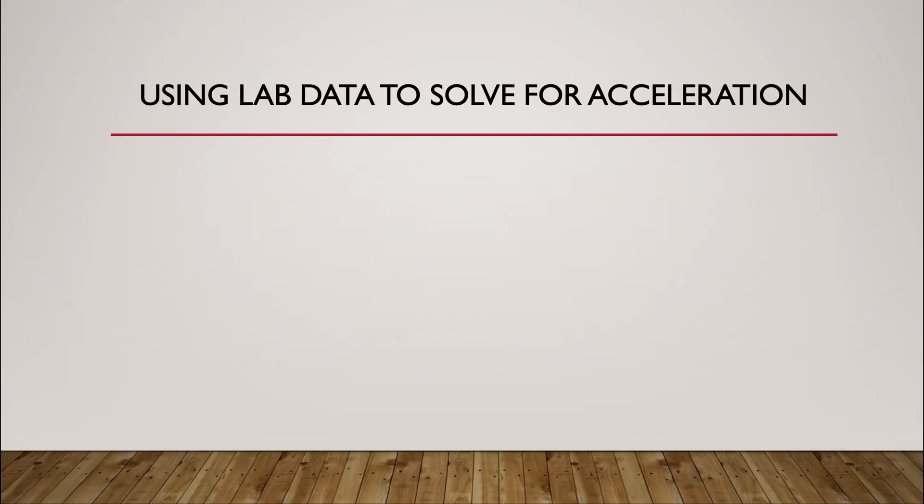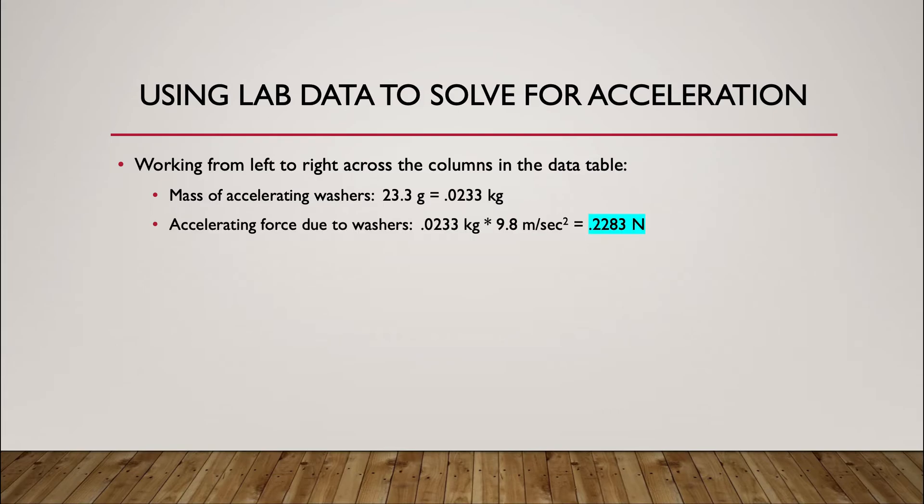Then you're going to use your lab data. So if you're looking at the columns in your data table, I don't have a data table in front of me, but you can grab yours and look at it. So the mass of the accelerating washers, you measure on the scale that comes out in grams, you convert that to kilograms. And then the accelerating force due to the washers is that mass, what we got here was 0.0233 kilograms multiplied by the acceleration due to gravity. That unit comes out in newtons because kilogram meters per second squared are newtons. That is the accelerating force, and I have that highlighted because that's a number you're going to use on your data table later. Once you have the force, you can set it aside.